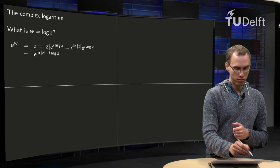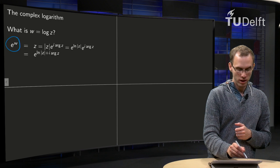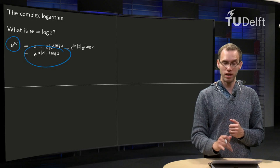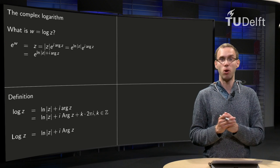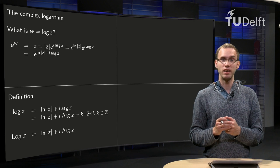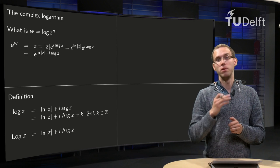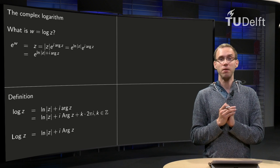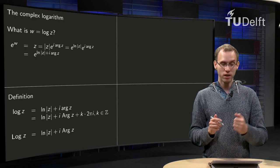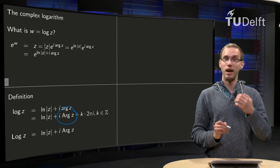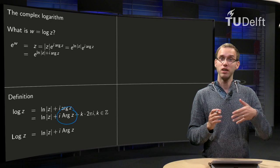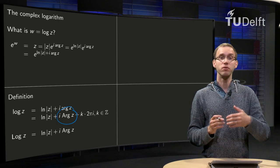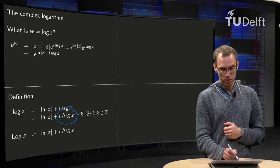We see we have something of the form e to the power w equals e to the power something else, and that means w has to be equal to that something else — and that is how we define our log. We define log(z) as ln|z| plus i times the argument of z. There is a small 'a' here, and we know this argument is not unique. We can make it unique if we choose the capital Arg(z), where the capital Arg(z) is between minus pi and pi. But we know we can always add a multiple of 2π.